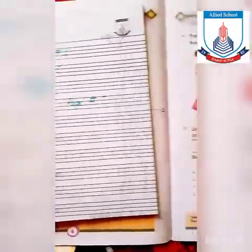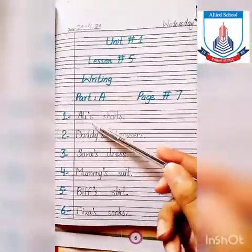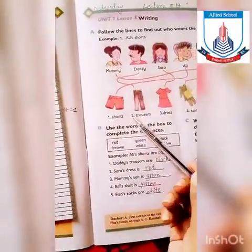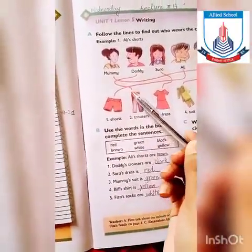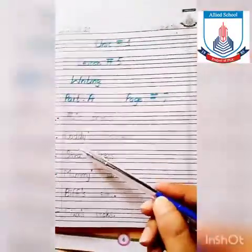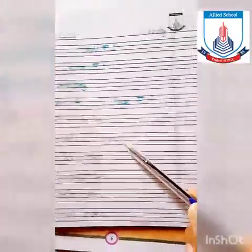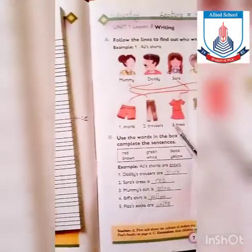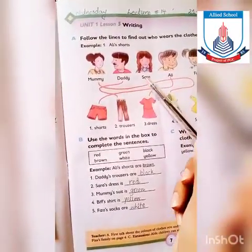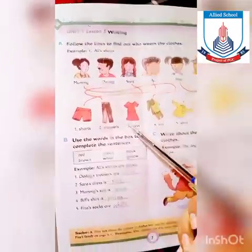اب ہم book پہ دیکھیں گے — number one پہ تھا Ali's shorts، number two پہ کیا تھا Trousers، کس کا تھا؟ Daddy's trousers۔ Number two Daddy's trousers، number three ہے dress — dress کی لائن دیکھیں گے — Sarah's dress۔